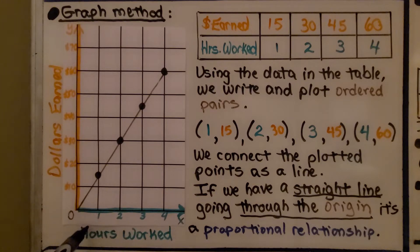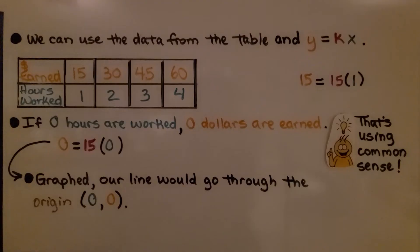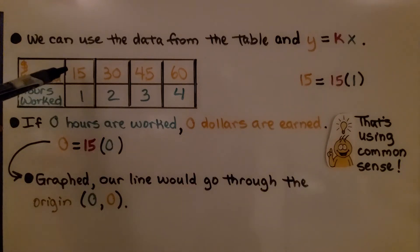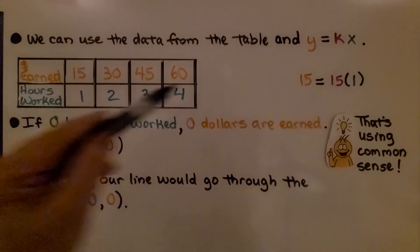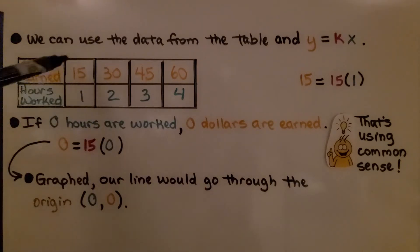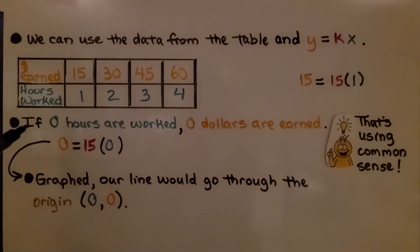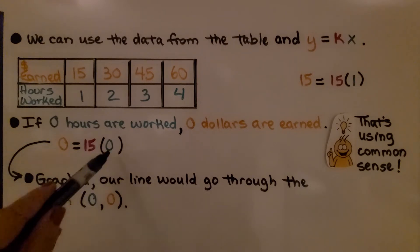You work zero hours, you're going to make $0. We can use the data from the table and y = k times x. We would have 15 = 15 times 1. If zero hours are worked, zero dollars are earned — that's using common sense. And graphed, our line would go through the origin, (0, 0).